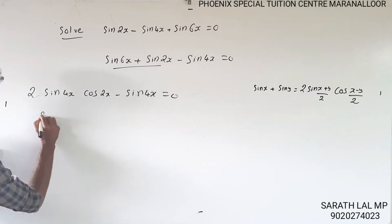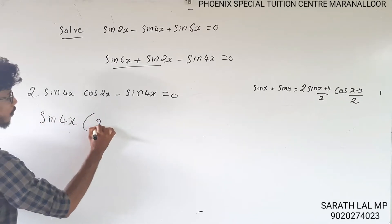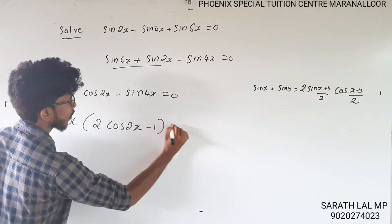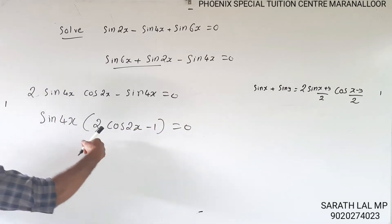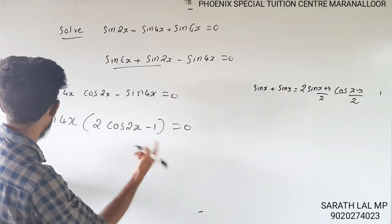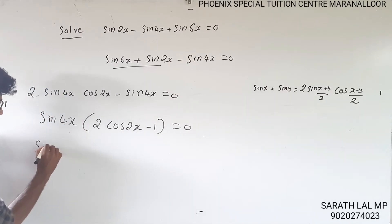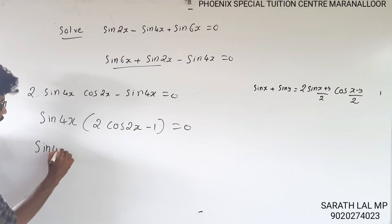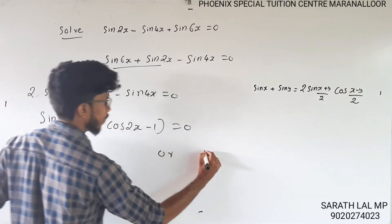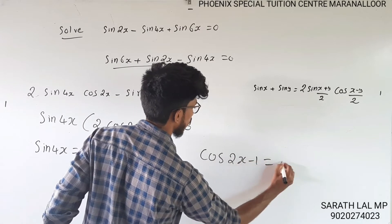Sin4x is common, so we factor it out: sin4x · (2cos2x - 1) = 0. This gives us either sin4x = 0 or 2cos2x - 1 = 0.